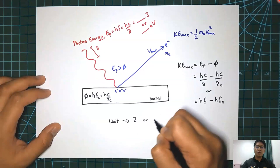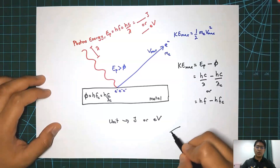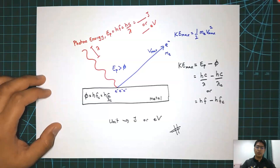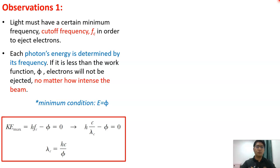Whether using joules or electron volts, stick with one unit system throughout all calculations. From experiment, light must have a minimum (cut-off) frequency hf_c in order to eject electrons. Each photon's energy is determined by its frequency; if it is less than the work function, electrons will not be ejected no matter how intense the beam. The minimum condition is that E must be greater than or equal to the work function.